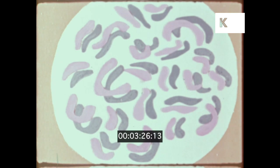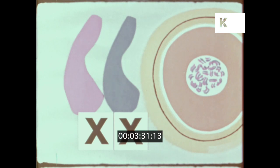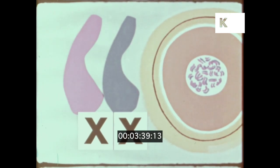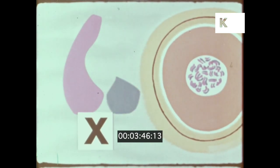If this 23rd pair consists of two long chromosomes called XX, the baby which develops out of that egg will always be a girl. But if the 23rd pair consists of a long X chromosome and a short one called Y, the egg will always grow into a boy.